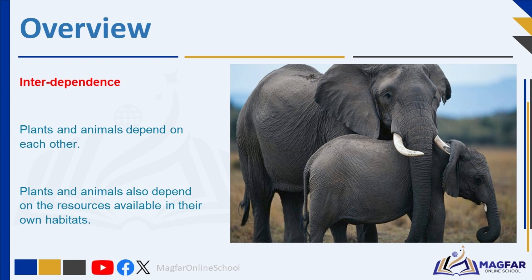Good day and welcome to today's lesson on interdependence of living things. At the end of class today, you should be able to define the term interdependence, explain how plants and animals depend on each other giving real examples, and explain how habitats provide resources for plants and animals.